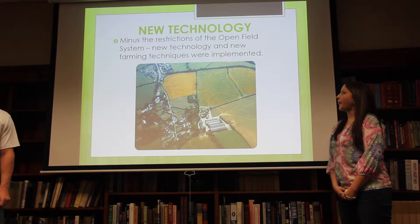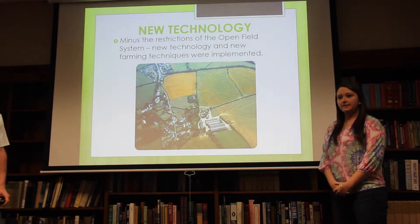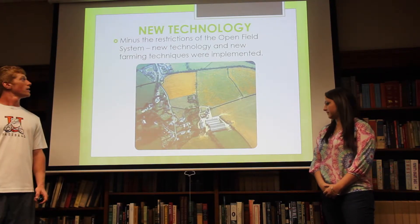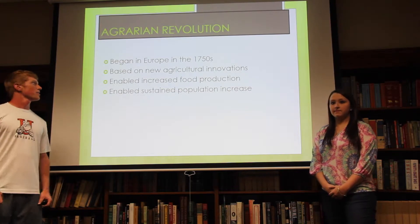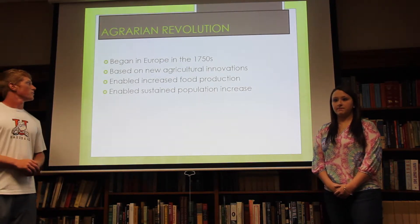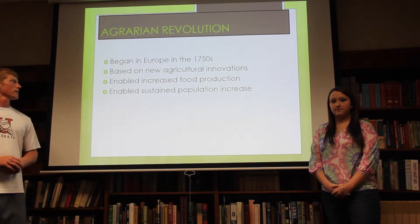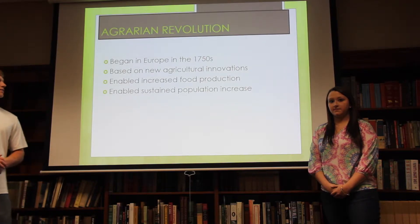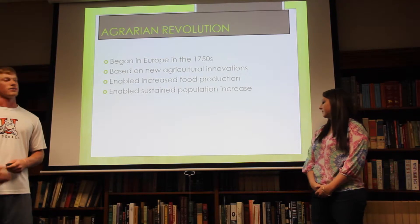Now we're going to talk about the new technologies. Minus the restrictions of the open field system, new technology and new farming techniques were implemented. The agrarian revolution happened in Europe in about the 1750s. It was based on new agricultural innovations and it enabled increased food production and sustained population increase — as the population increased, they were able to keep up and keep producing food.